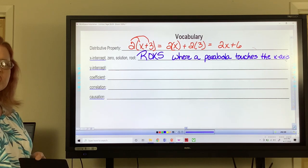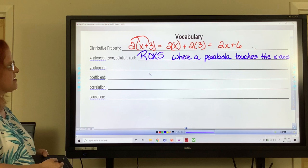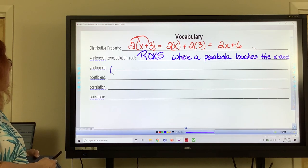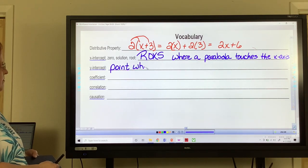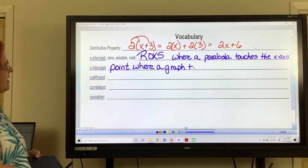A parabola is just the graph of a quadratic, so it's where the graph touches the x-axis. Y intercept, the point where the graph touches the y-axis.